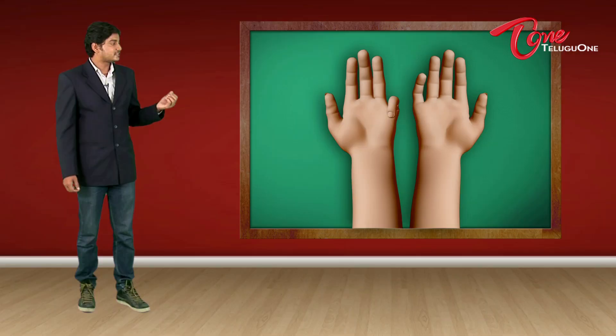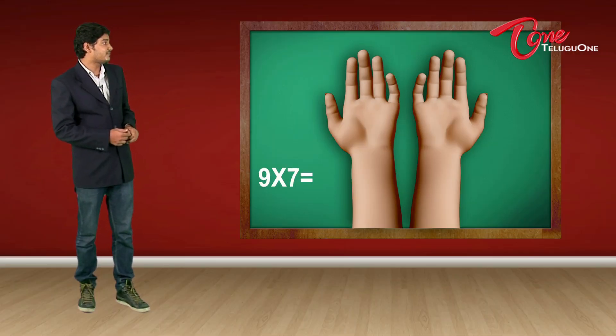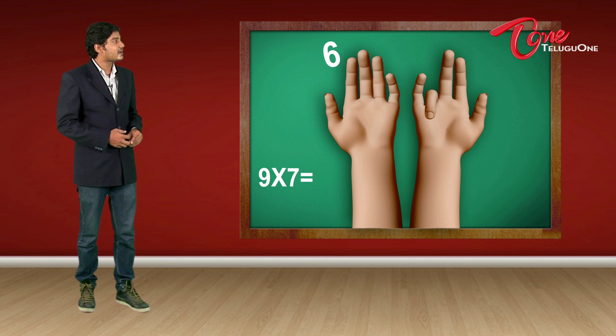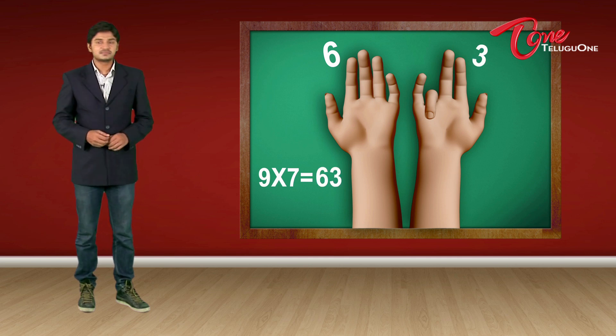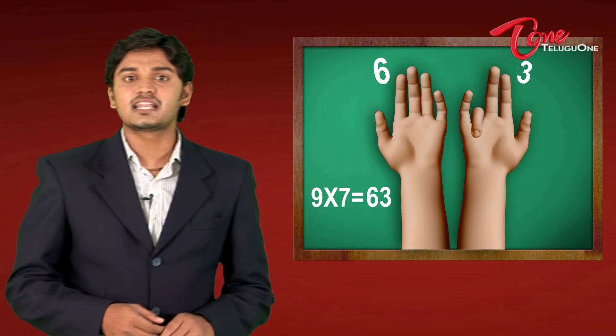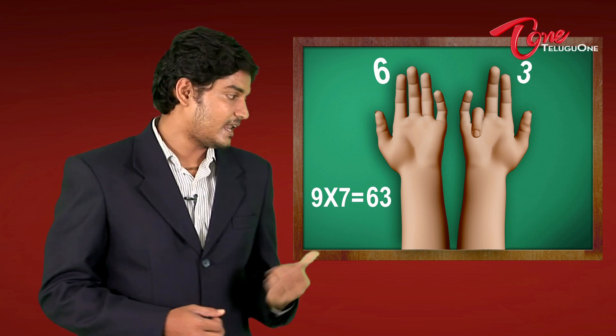Let us see another example. Suppose I want to take 9 times 7. So I'm going to close my 7th finger. So how many fingers do I have before 7? Yes, it is 6. And how many fingers do I have after 7? That is 3. So my answer comes as 9 times 7 is 63. So this way, you can find out the answer directly for any table on 9.